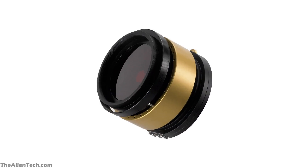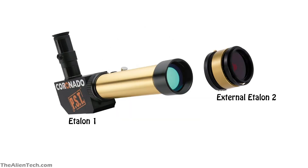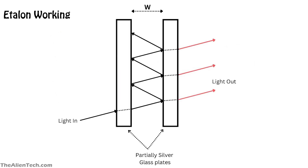Solar telescopes have something called an etalon. The etalon is the heart of the solar telescope — it is nothing but a type of filter. Etalon consists of two parallel reflecting mirrors which are used to achieve ultra-narrow bandpass. It has two flat parallel semi-transparent mirrors separated by a certain distance, and this arrangement itself is called an etalon. Light that enters the etalon goes through multiple reflections, and the interference of the light emerging out from the etalon during each bounce causes a modulation in the transmitted and reflected beams. The resulting optical transmission is periodic in wavelength.